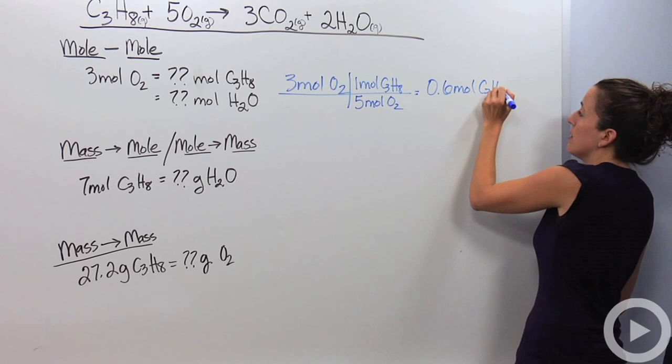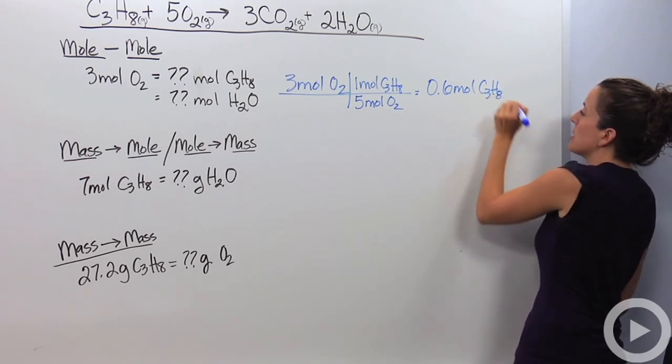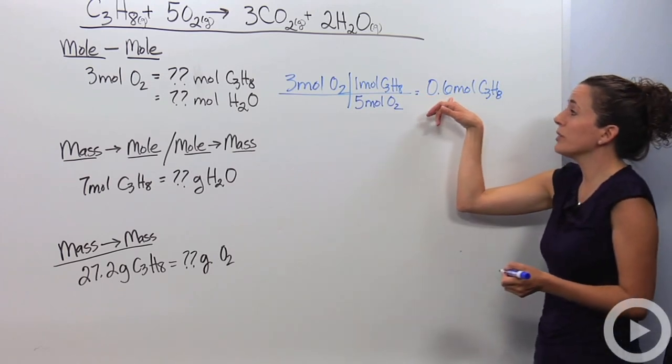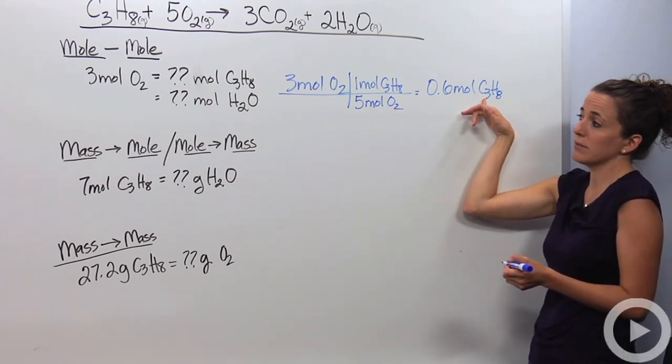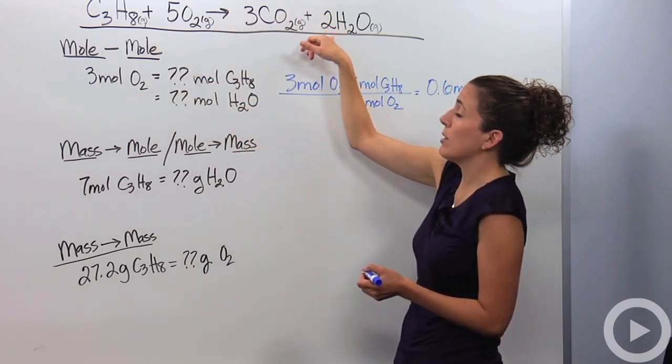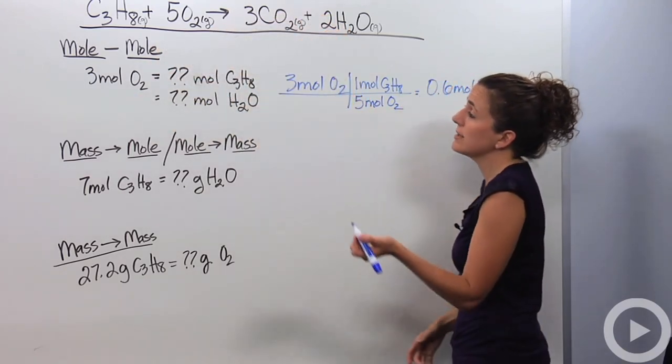So I actually need 0.6 moles of C3H8. If I had 3 moles of O2 to start with, I'm actually going to need only 0.6 moles of C3H8. So if I had 3 moles of O2, how many moles of water am I going to be able to produce? I'm going to do kind of the same thing.